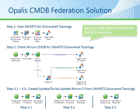The Opalis CMDB Federation solution is a combination of different workflows working together to federate the CMDB with information from Smarts. There are essentially three high-level steps, with the third step having three minor sub-steps. Step one is to scan Smarts for discovered topology. In that workflow we have an object querying Smarts for discovered topology, then we set some counters, format some date timestamps, and trigger another workflow. That triggered workflow is step two, where we check Atrium CMDB for Smarts-discovered topology. We take the information received from the first workflow, format the dates, and use that information to query the CMDB — the Get CI Instance object is an Atrium CMDB Opalis Integration Pack object.